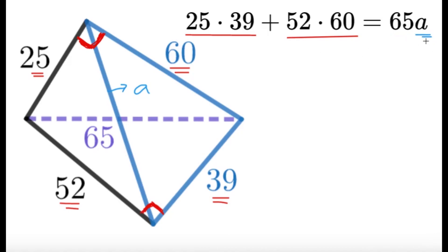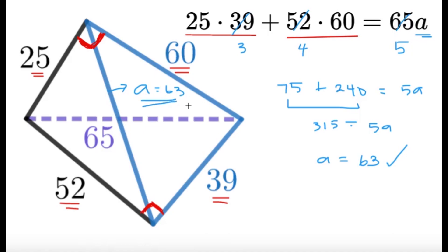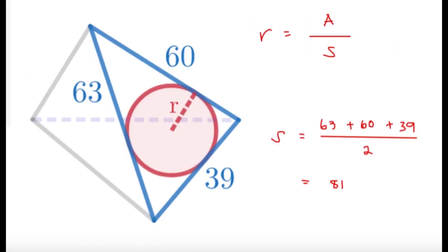This is now an equation we can solve for A. These values are a bit big, but 39, 52, and 65 share a common factor of 13, so we divide both sides by 13 to get 25 times 3 plus 4 times 60 equals 5A. So 75 plus 240 equals 5A, giving 315 equals 5A, and dividing both sides by 5: A equals 63. We've reached our goal, so what follows is just getting the area and semiperimeter of the blue triangle using R equals area over semiperimeter.